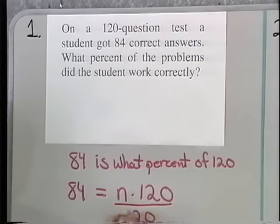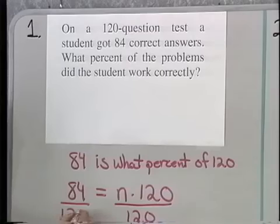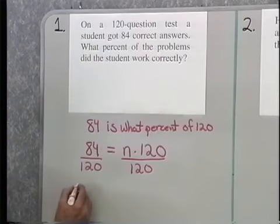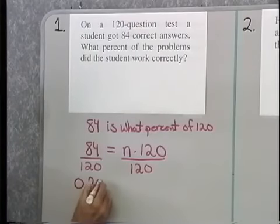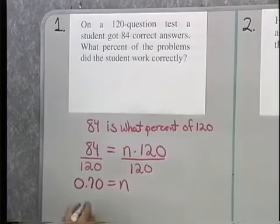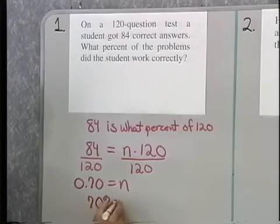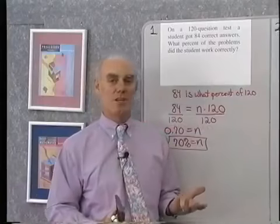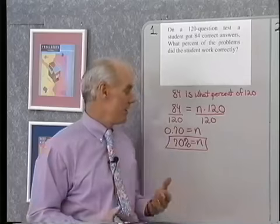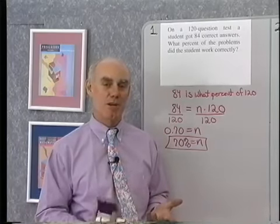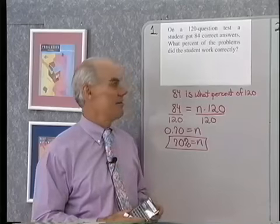Divide both sides by 120. Doing that division — 84 divided by 120 on a calculator — gives 0.70 equals N. So N is equal to 70 percent. If a student takes a 120-question test and gets 84 correct answers, they've answered 70 percent of the questions correctly, because 84 is 70 percent of 120.